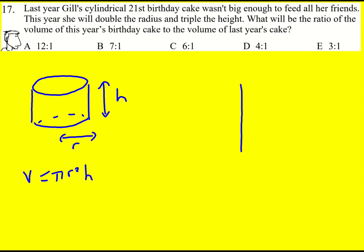Okay, then this year, tripling the height and doubling the radius means the height is going to become 3h and the radius is going to become 2r.